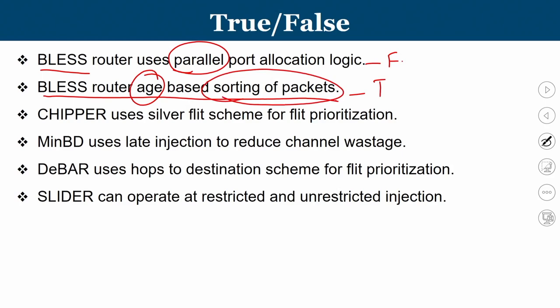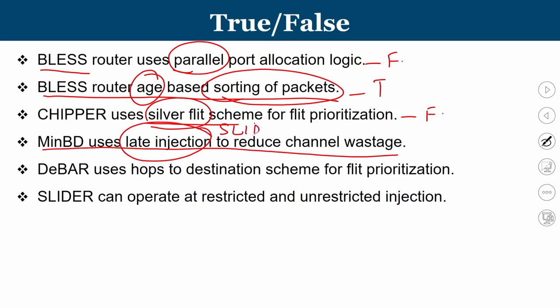Third statement: chipper uses the silver flit scheme for flit prioritization. This is false — chipper uses the golden packet scheme. It is minbd that makes use of the silver flit concept. Fourth statement: minbd uses late injection to reduce channel wastage. This is also false — the concept of late injection belongs to slider (smart late injection deflection router), not minbd.